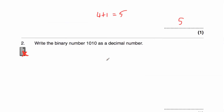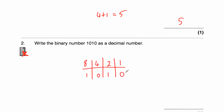Let's have a look at question two. Again, write down our columns: start with 1, multiply by 2 is 2, multiply by 2 is 4, multiply by 2 is 8. We've got the number 1010: no 1s, one 2, no 4s, and one 8. So we've got an 8 and a 2, so 8 plus 2 equals 10. The binary number 1010 as a decimal number is 10.